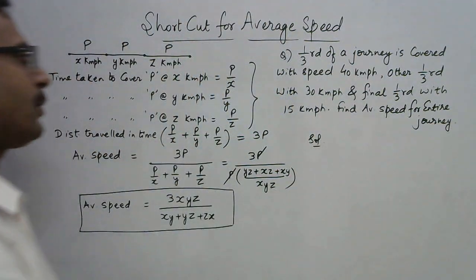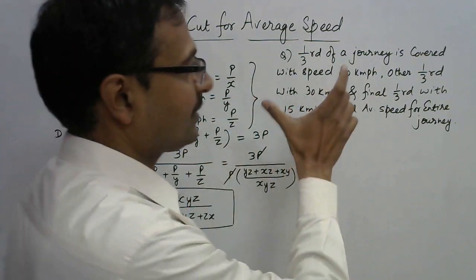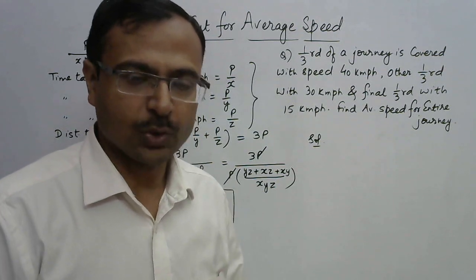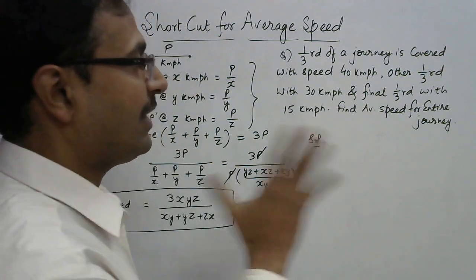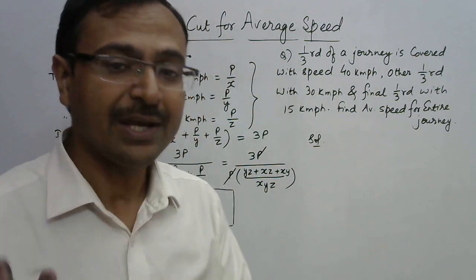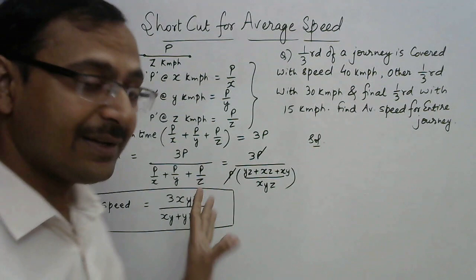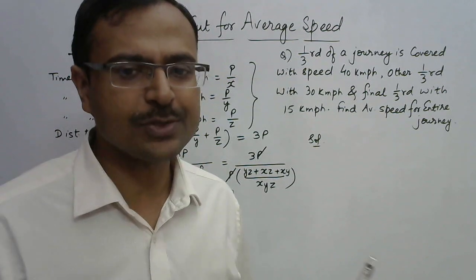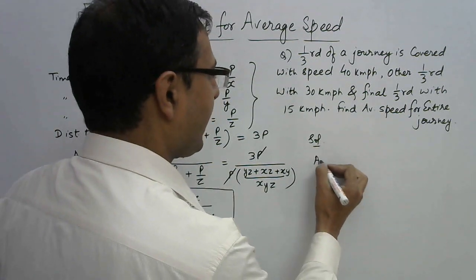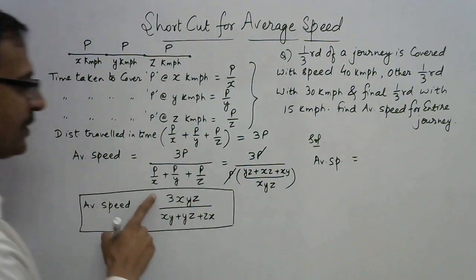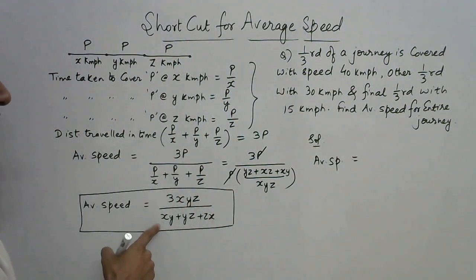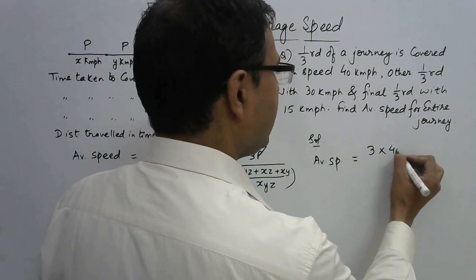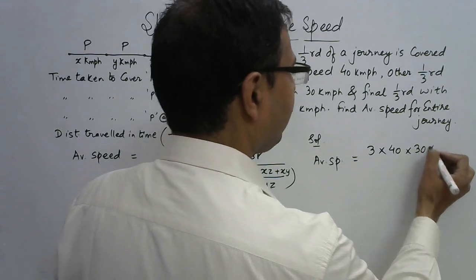Using the shortcut directly: the average speed is 3 times the product of the three speeds divided by the sum of products in pairs. So that is 3 times 40 times 30 times 15, divided by (40×30 + 30×15 + 40×15). Let's compute the denominator: 40×30 = 1200, 30×15 = 450, 40×15 = 600.